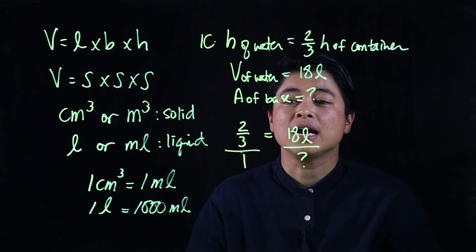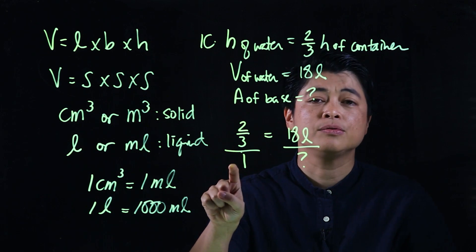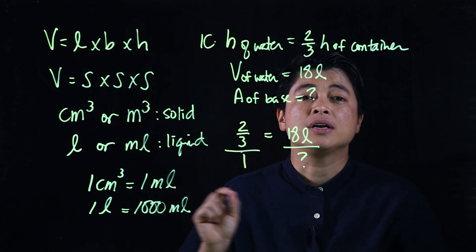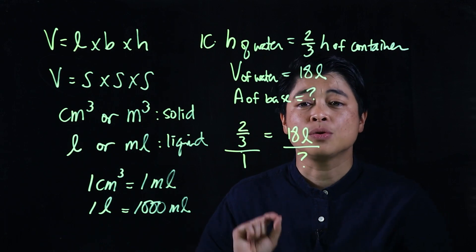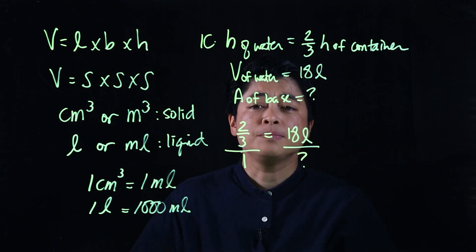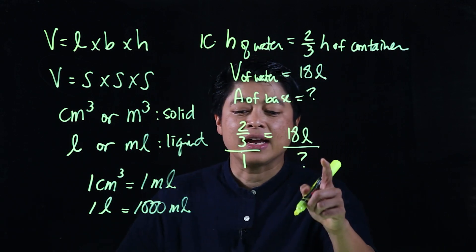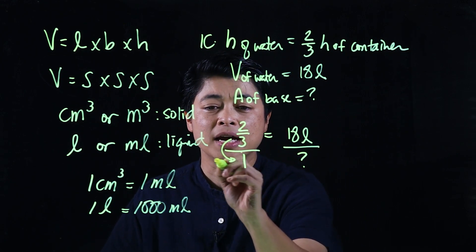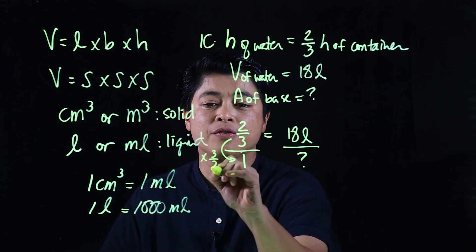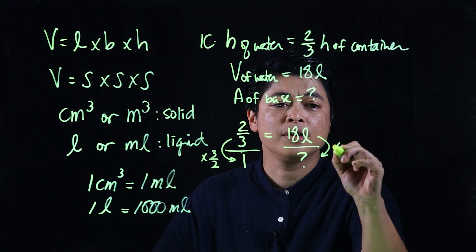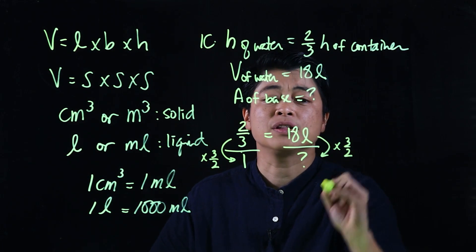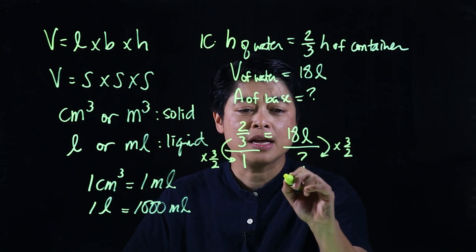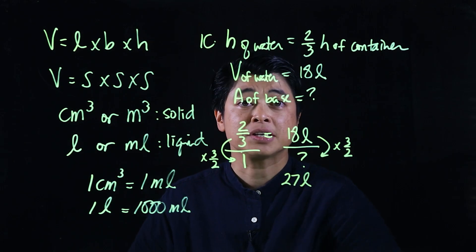100 percent is written as one. To find the full volume, we multiply by three over two. So if two-thirds equals 18 liters, multiplying by three over two gives us a total volume of 27 liters.